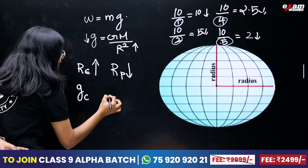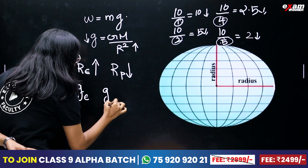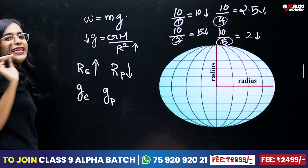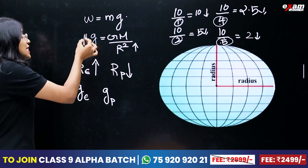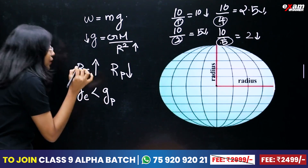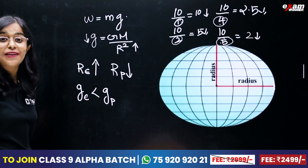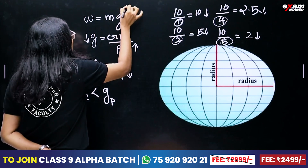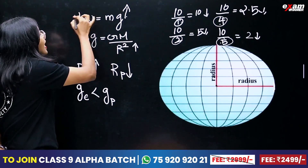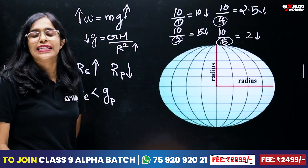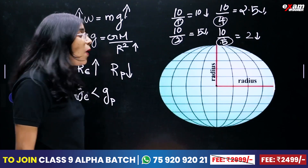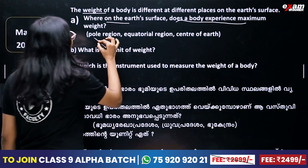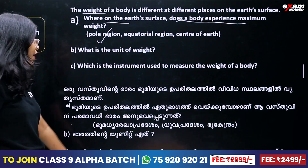G at the equator and G at the pole: the poles are where g value is greater. Poles — Dhruvans — have the maximum weight.